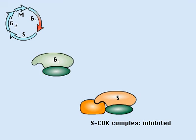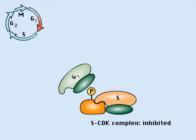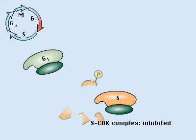Near the start of S-phase, a G1-CDK phosphorylates the inhibitor, targeting it for degradation.